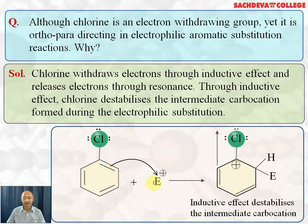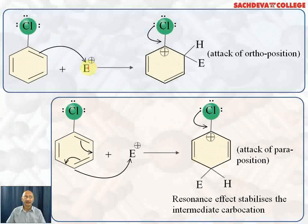When the electrophile attacks at the ortho position, a pair of electrons shifts to ortho and a positive charge forms on the carbon attached to halogen. The inductive effect destabilizes this intermediate carbocation because chlorine is electron-withdrawing and increases the positive charge. However, considering the resonance effect, the lone pair of electrons on chlorine takes part in double bond formation to stabilize or reduce this positive charge. Resonance stabilizes the carbocation at the ortho position.